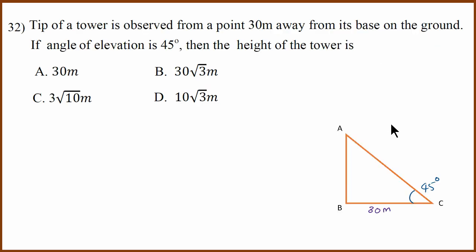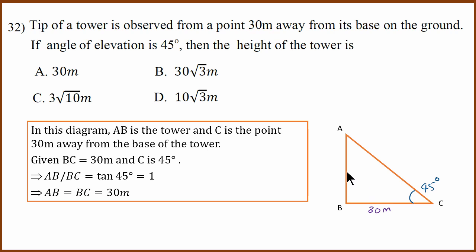Thirty-second question is an application of trigonometry problem. The tip of the tower is observed from a point 30 meters away. The angle of elevation is 45 degrees. Since tan 45 equals 1, AB divided by BC equals 1, meaning AB equals BC equals 30 meters. When the angle of elevation is 45 degrees, the height and horizontal distance are the same — both 30 meters. Answer A.